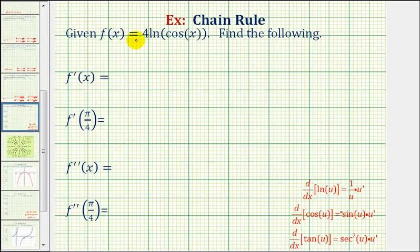Given f of x equals four times the natural log of cosine x, we want to find f prime of x, f prime of pi over four, f double prime of x, and f double prime of pi over four.